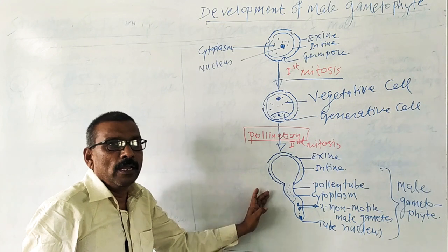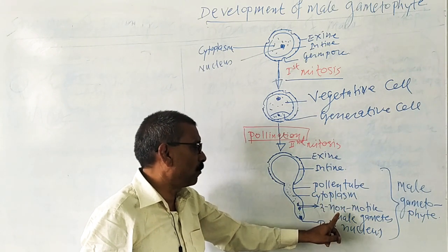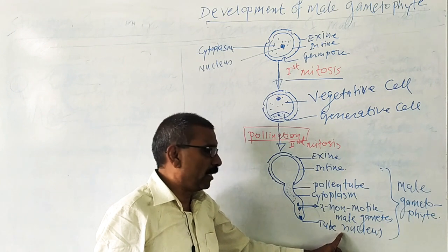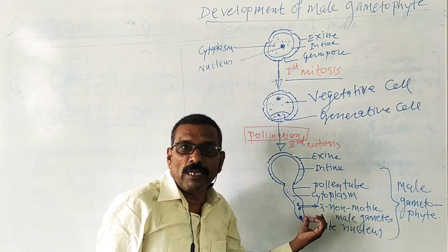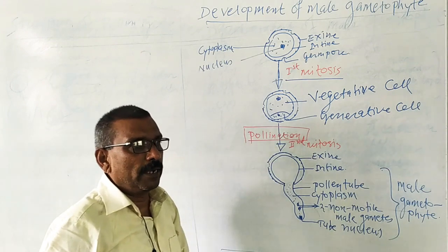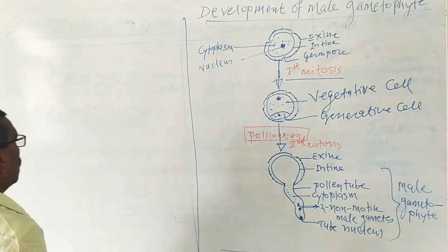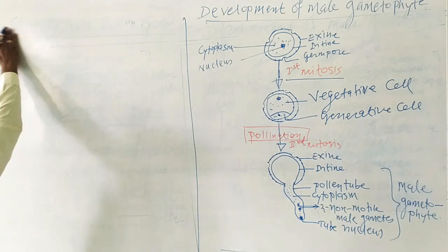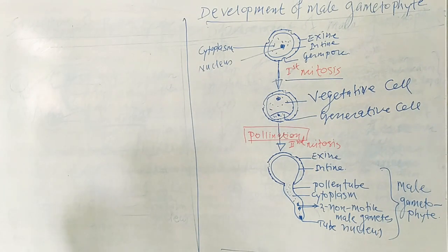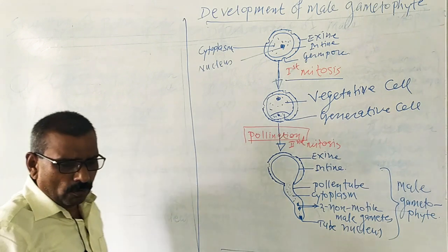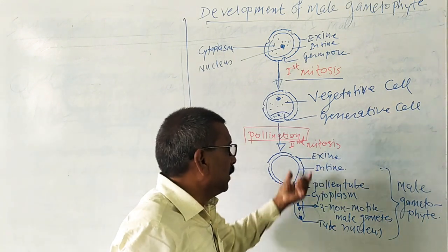The male gametophyte consists of the pollen tube, cytoplasm, two non-motile male gametes, and a tube nucleus. Development of the male gametophyte is completed. Now we are going to study the female reproductive organ of the flower.